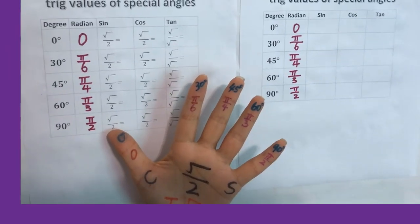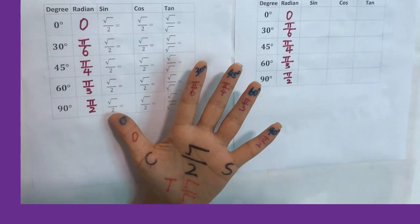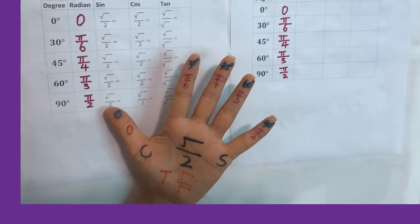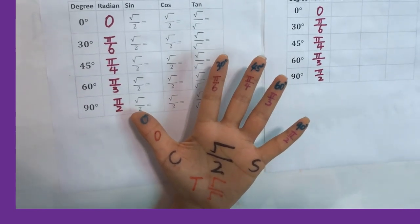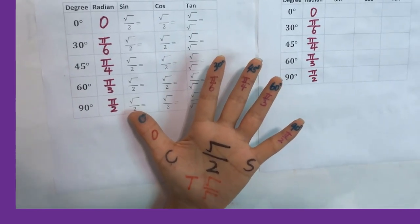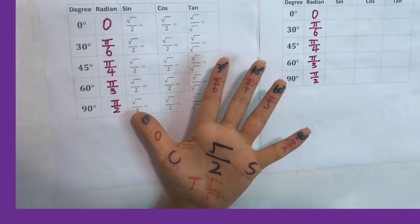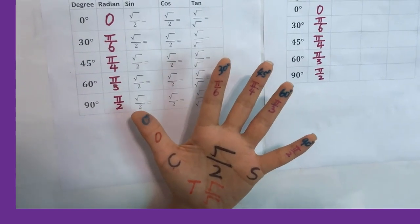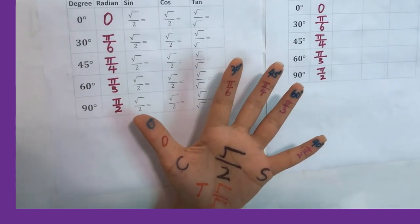This video is about left hand tricks to remember trig values of 4 special angles. We use the left hand because you can use the right hand to write down the answers and use the left hand to show the tricks to figure out the trig values of the 4 special angles.